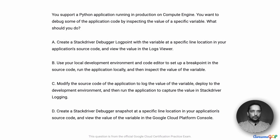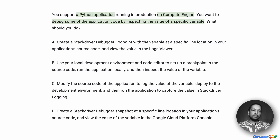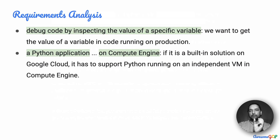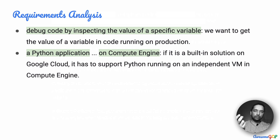In this project scenario, you support a Python application running in production on Compute Engine. You want to debug some of the application code by inspecting the value of a specific variable. The requirement is fairly simple — we've got a Python application in production on Compute Engine, and we want to debug the application code by looking at a specific variable while it is in production.